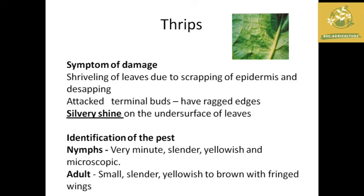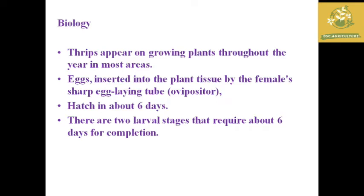Next is Thrips. We can see a silver appearance and light on the surface of the leaves. The nymph is very thin and has a yellowish color. The adult is yellowish to brown with fringed wings. Eggs are laid in plant tissue. The life cycle is completed in 6 days.